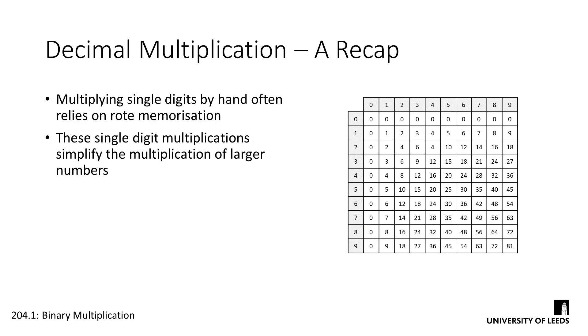So let's take a look at how we multiply decimal numbers. When we multiply single digit decimals, we usually do this by rote memorization. When we were young, we will have learned our times tables, telling us what one number multiplied by all others are.